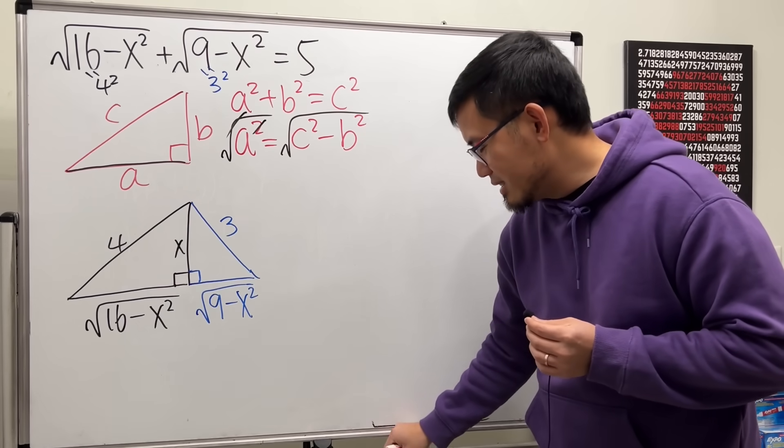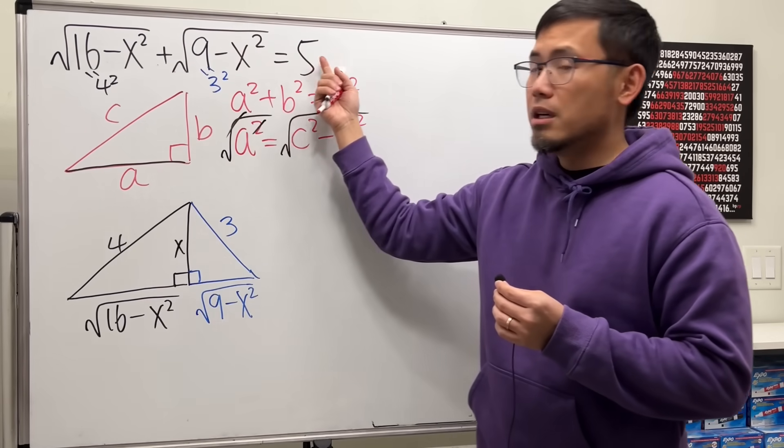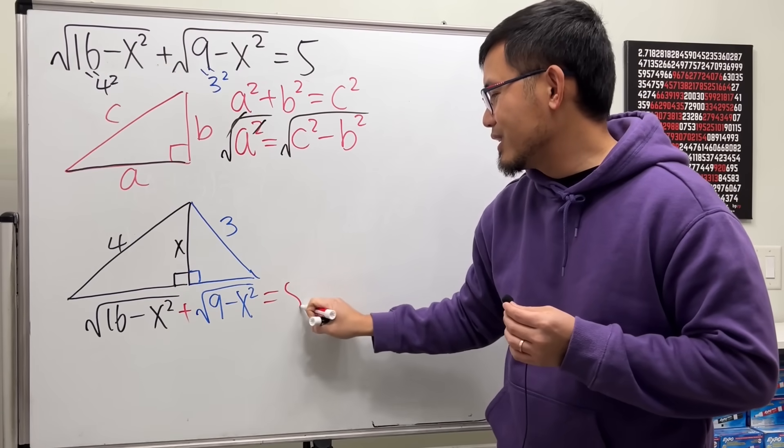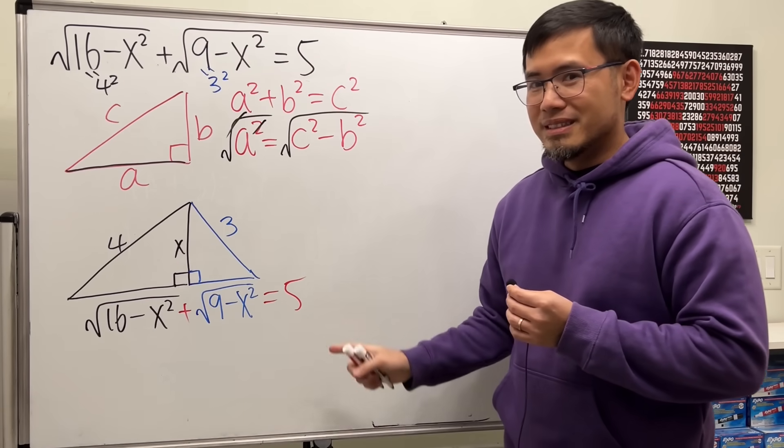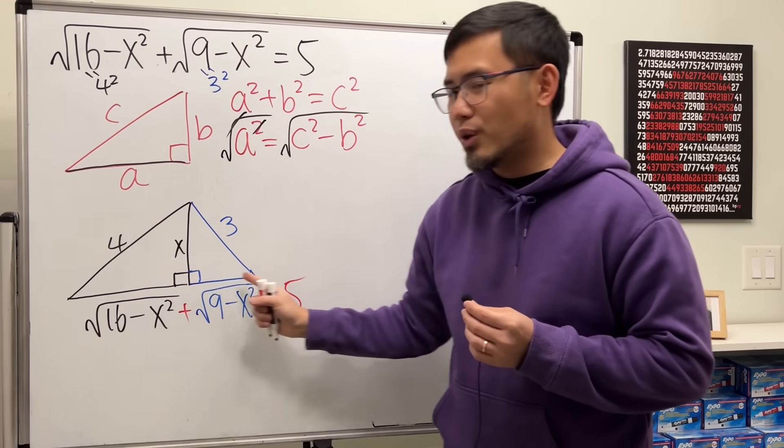And you can see that on the bottom, we have this first term plus the second term. It must be equal to 5. Ooh, look at this. Look at this. The numbers are so nice.